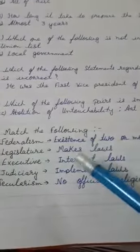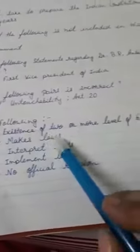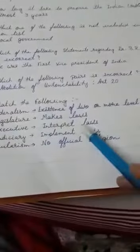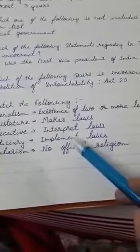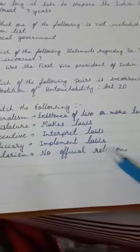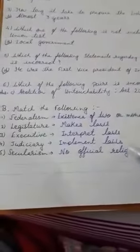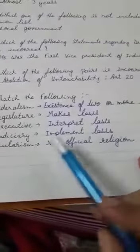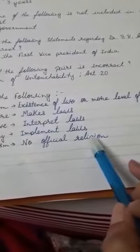Now we come to the match the following. Federalism means the existence of two or more levels of government. Legislature — it can make law. Executive — it can interpret law, meaning it can explain or understand about the law. Judiciary implements law. Secularism — no official religion.